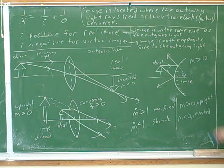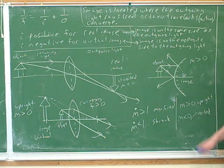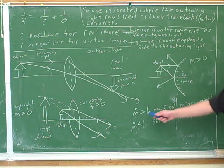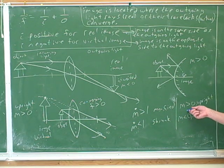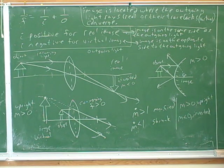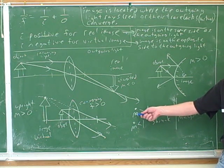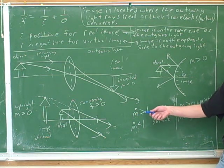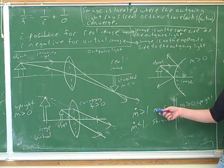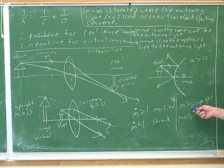In a way, it's unfortunate that we're using m for two different things, because that makes it easy to get confused — people forget what the magnitude tells you and what the sign tells you. If you look at the absolute value of m, you compare that to one, and that tells you whether the image is magnified or shrunk. But the sign tells you whether it's upright or inverted.